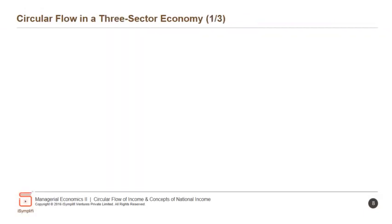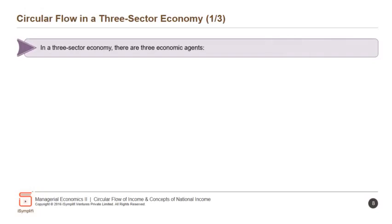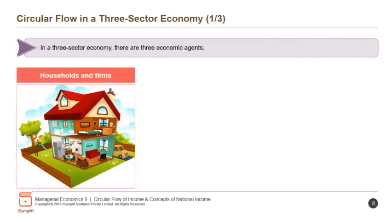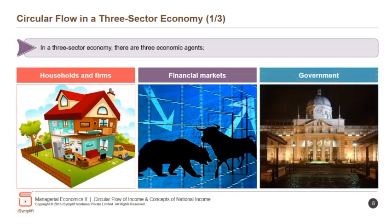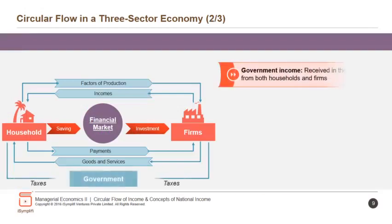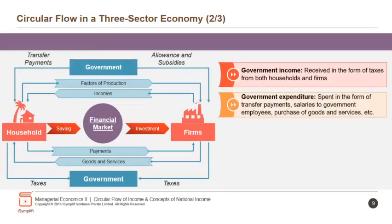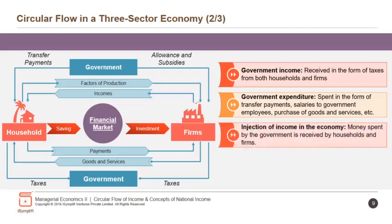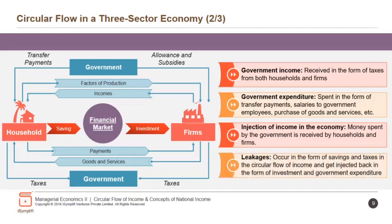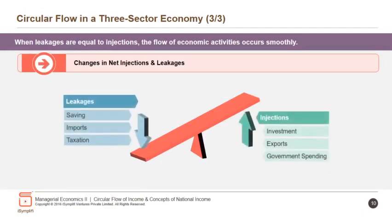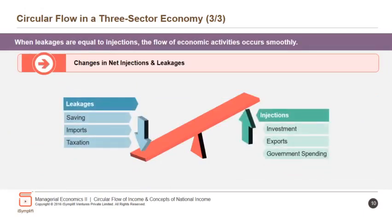Next is the circular flow in a three-sector economy. In a three-sector economy, there are three economic agents: households and firms, financial markets, and government. Government income is received in the form of taxes from both households and firms. Government expenditure is spent in the form of transfer payments, salaries to government employees, purchase of goods and services, etc. Injection of income in the economy is the money spent by the government, received by households and firms. Leakages occur in the form of savings and taxes and get injected back in the form of investment and government expenditure. When leakages are equal to injections, the flow of economic activities occurs smoothly.